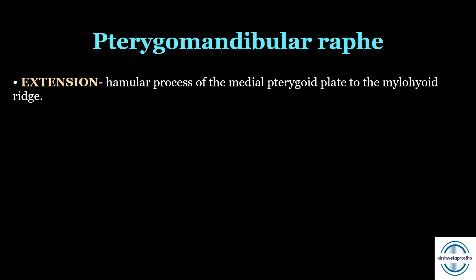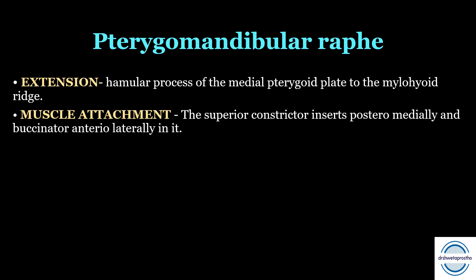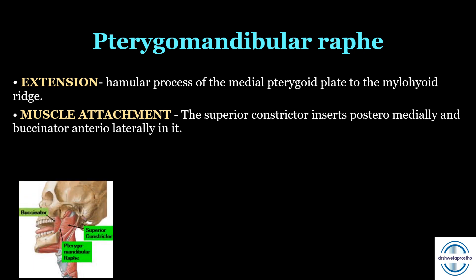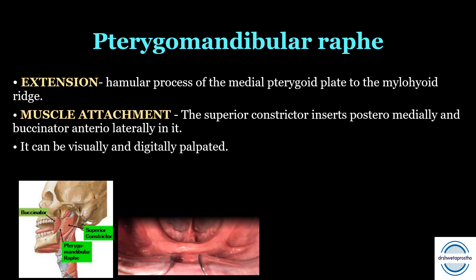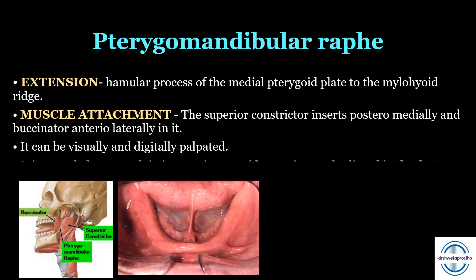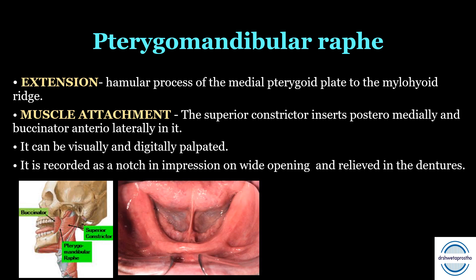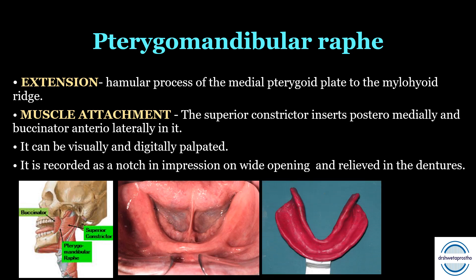The next and last important limiting structure is the pterygomandibular raphe. It arises from the hamular process of the medial pterygoid plate and attaches to the mylohyoid ridge. The superior constrictor inserts posteromedially and the buccinator inserts anterolaterally. It is visually and digitally palpated in the oral cavity, and is recorded as a notch in the impression on the distal-most part when the patient is asked to open wide. It should be relieved in the denture.